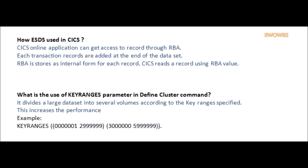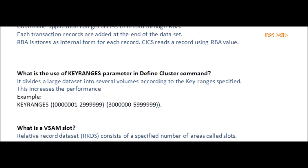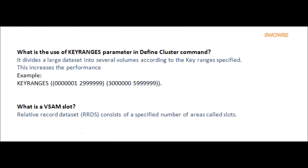Answer: CICS online application can get access to a record through RBA. Each transaction's records are added at the end of the data set. RBA is stored in internal form for each record. CICS reads a record using the RBA value.